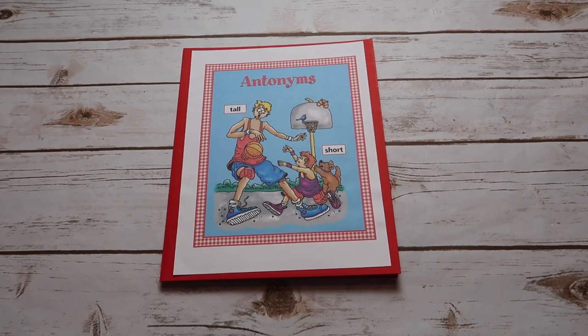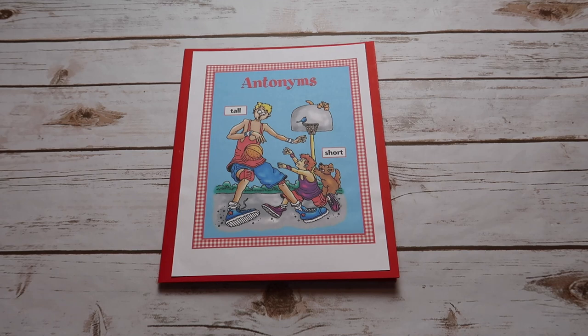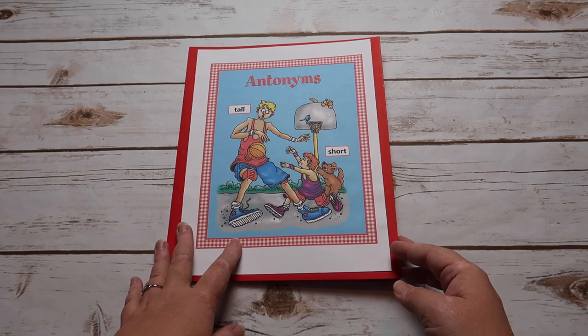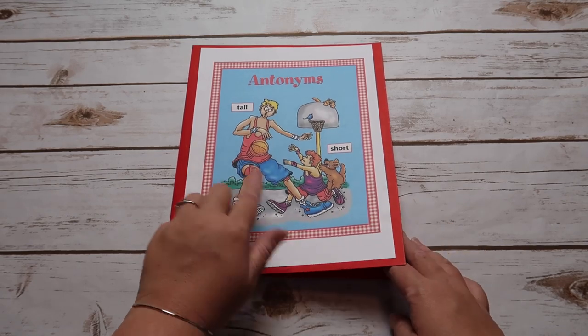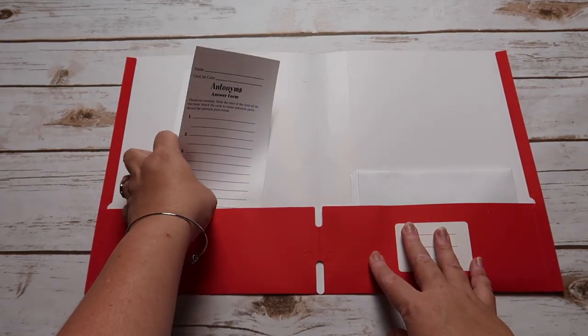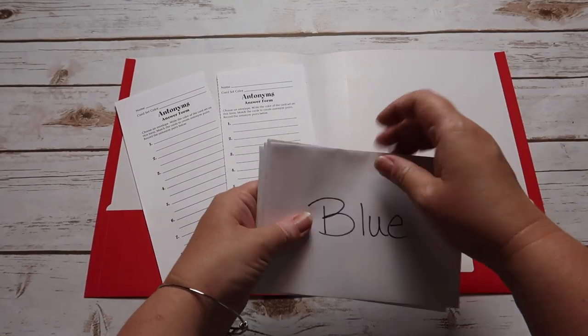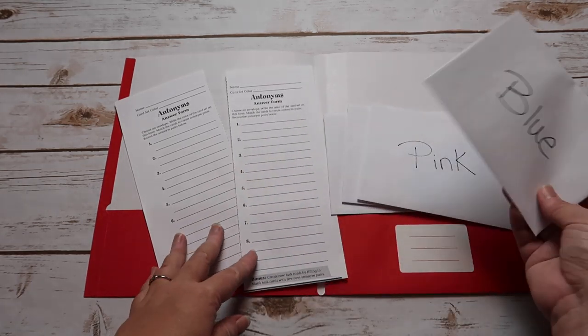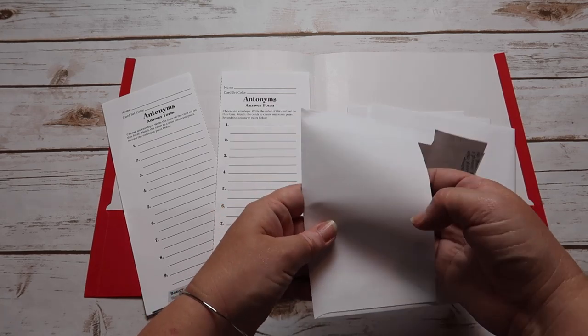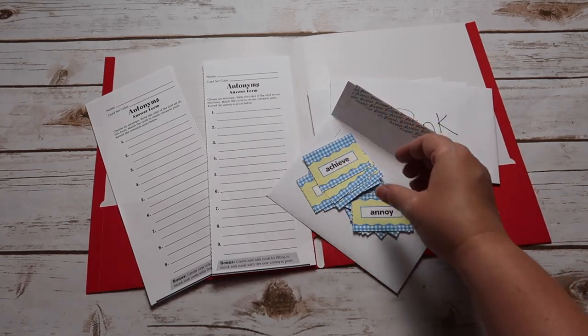The first center we're going to look at is from the literacy centers grades four through six, and it is antonyms. There are 13 different centers within the literacy one, and they cover multiple different topics. So this is just one of 13. So it shows you on the front tall and short. And then on the inside, these are your recording sheets. So I just cut these in half. And then over here we have four different envelopes. So they would pick, let's say blue the first time they write at the top, their name, the fact that they picked blue. And then they're going to pick like advanced and they're going to find an antonym.